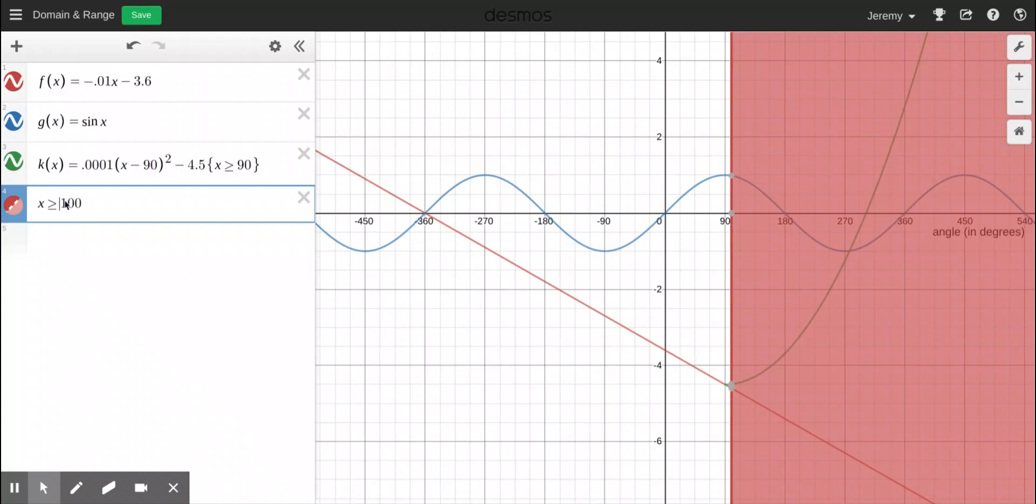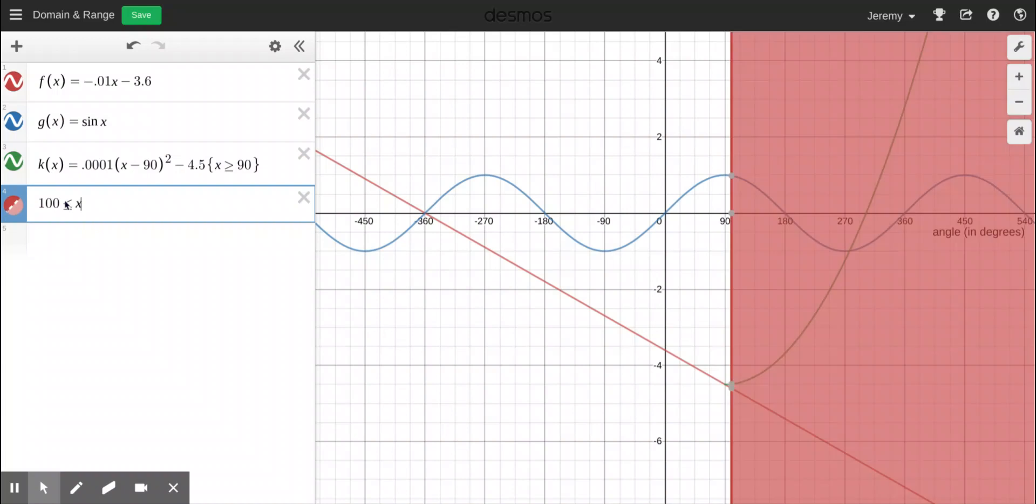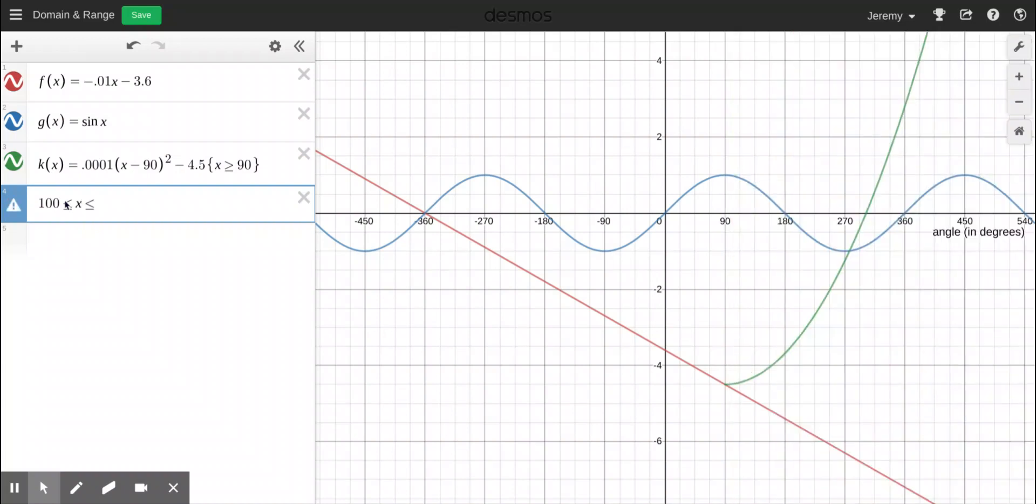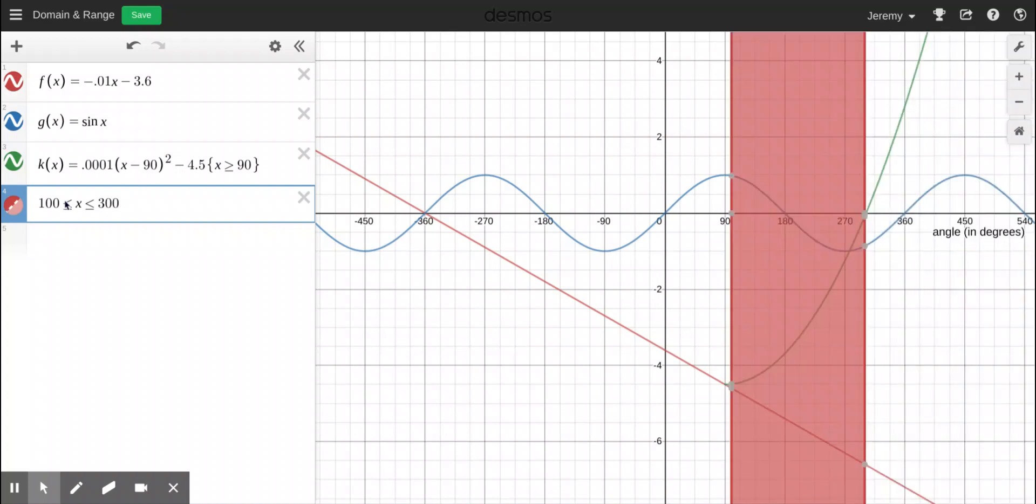So if I want to shade between two, what I could do is I could do a compound inequality. So I could say 100 is less than or equal to x, which is itself less than or equal to 300. And there you go. It's shading the values, all the places on the graph that have an x value between 100 and 300.